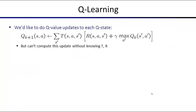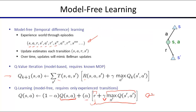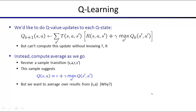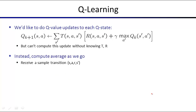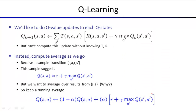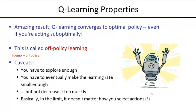What makes Q learning great is that you can act according to pretty much any policy and still find the optimal Q value function Q star through Q learning updates. You learn the values of the optimal policy without ever having to know or execute it. This is called off-policy learning, and it's a big deal.